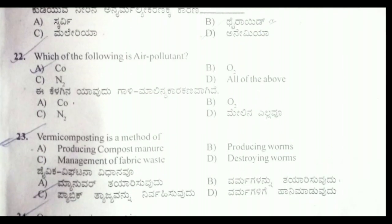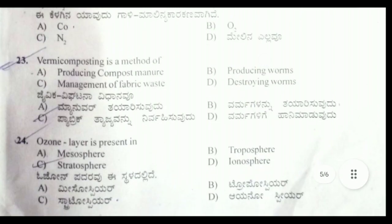Twenty-second question: which of the following is an air pollutant? Definitely it is CO, carbon monoxide. Twenty-third question: vermicomposting is a method of producing compost manure.